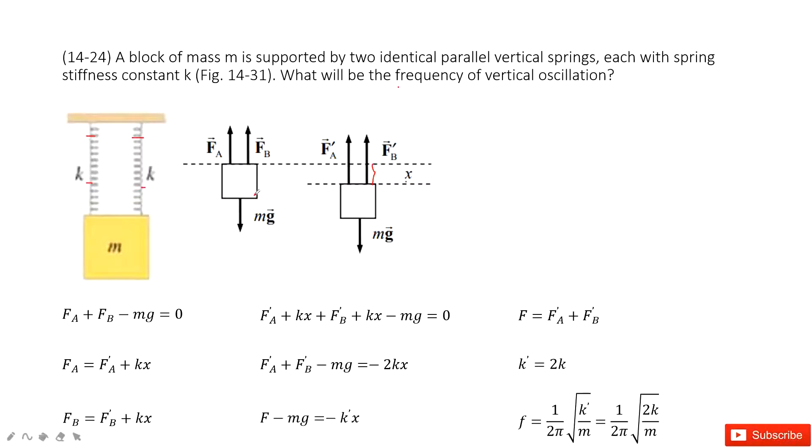At the initial position, we have F_A plus F_B minus mg equals zero. This is Newton's second law - the net force equals zero at the equilibrium position. Then we release it, and when it moves displacement X...